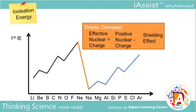This is because despite the increase in positive nuclear charge due to an increase in the number of protons, there is an increase in the number of principal quantum shells and thus an increase in shielding effect. Hence, there is a fall in effective nuclear charge and less energy is required to remove the first electron from the atom. Thus, first ionization energy falls.